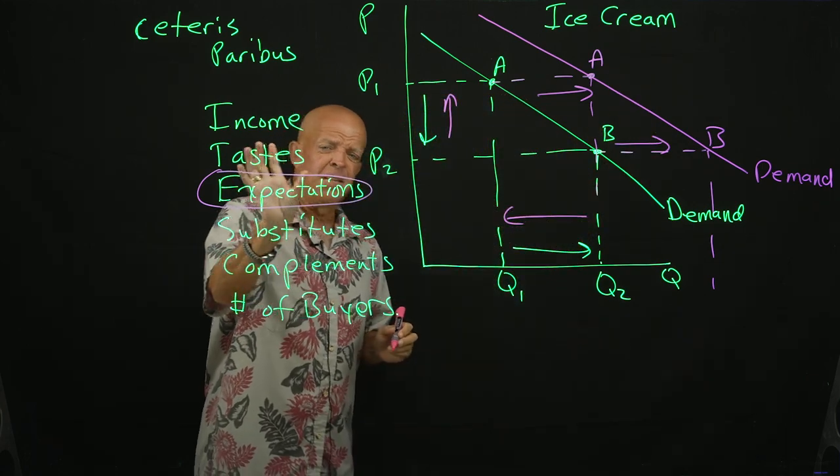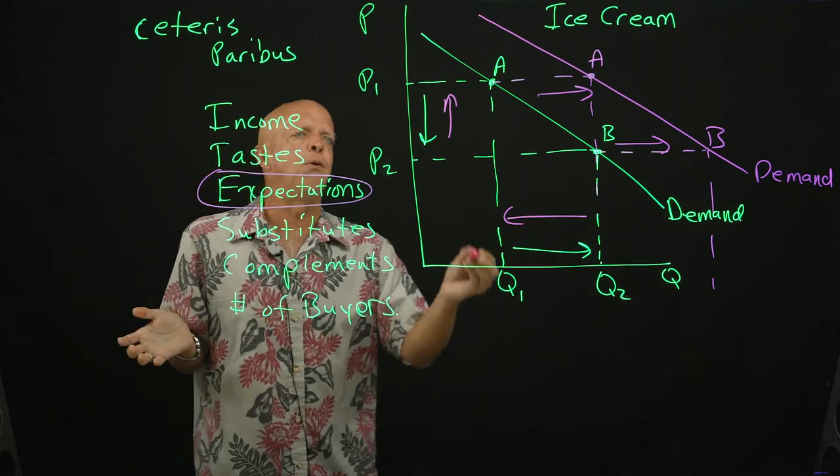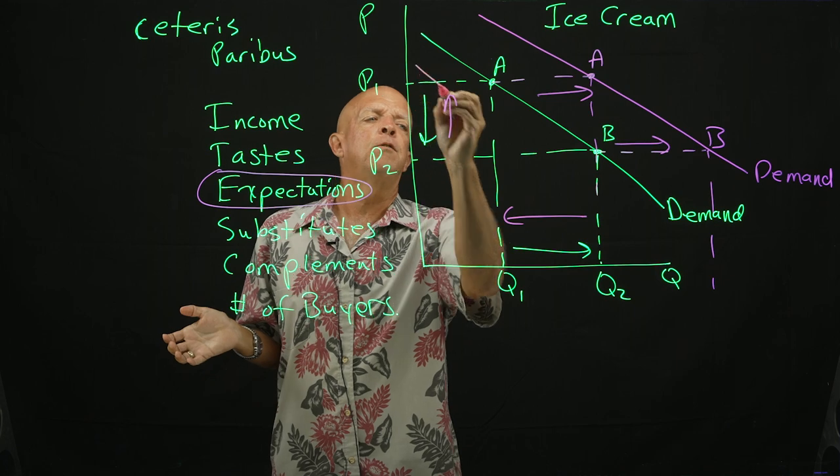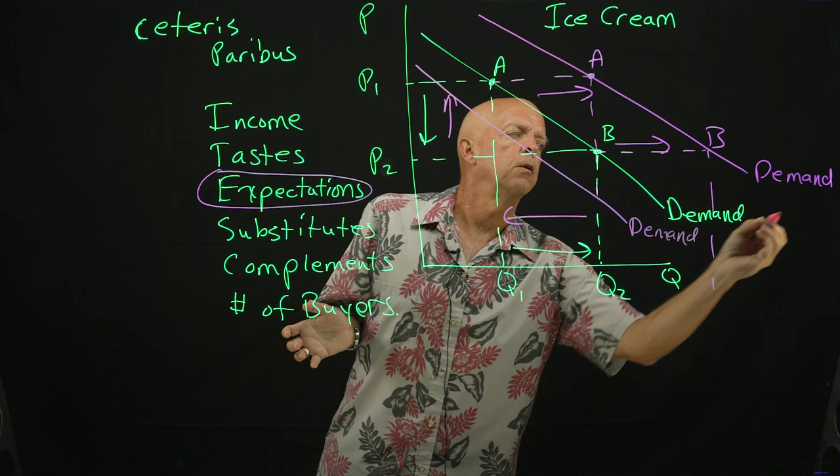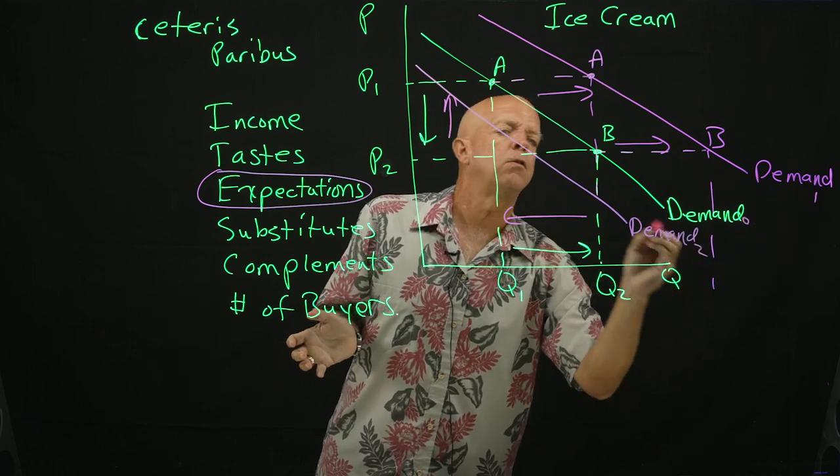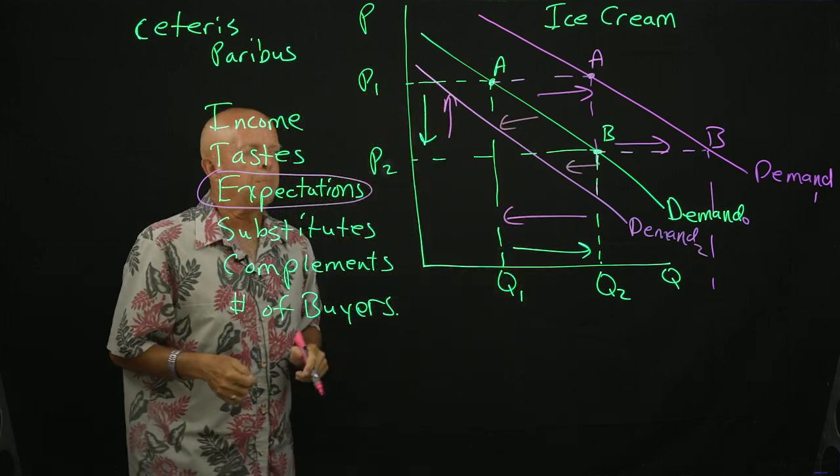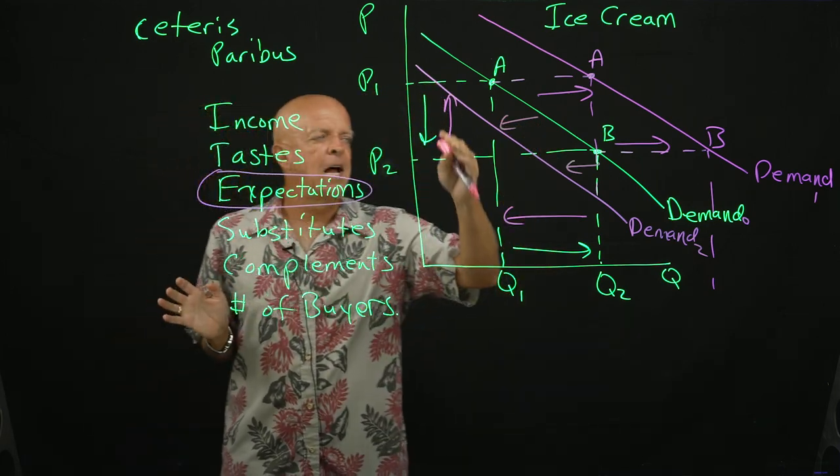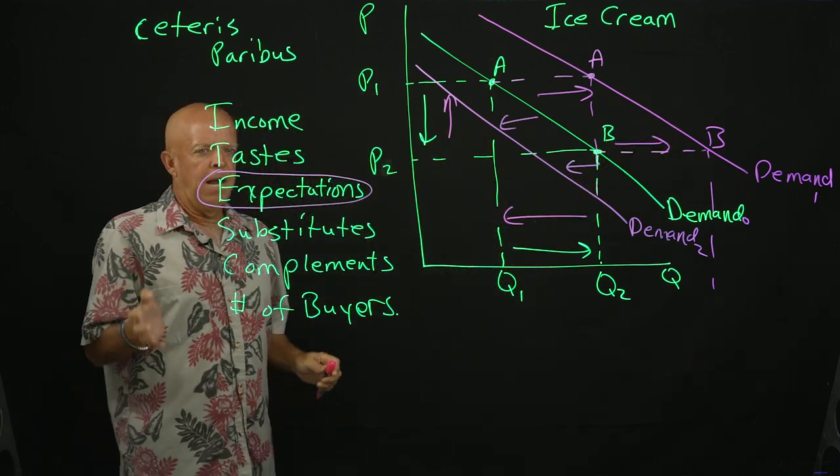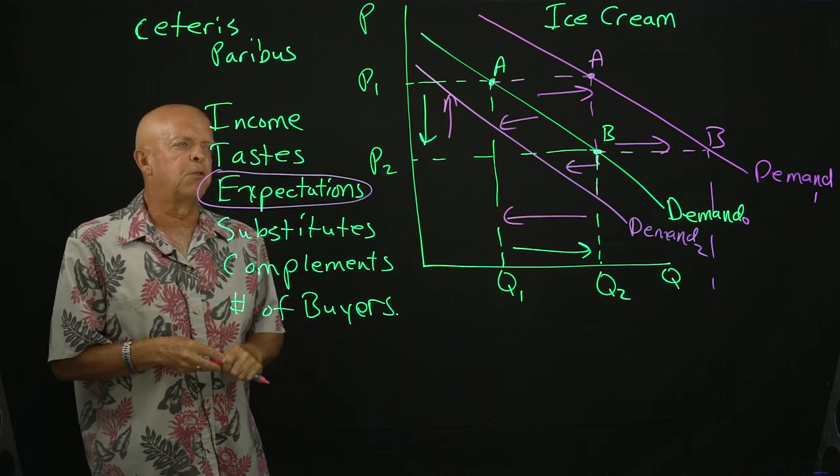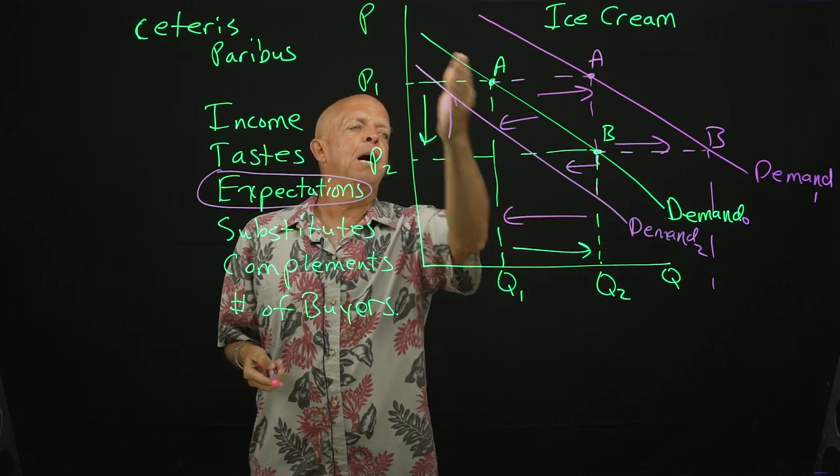Now, if these expectations means that I'm going to buy less of a product than before, well, my curve is going to shift to the left. Let's call this D zero, one and two. And this is going to shift this way, shift that way. So a shift is meaning that the whole line is going to shift either to the right or to the left. And that would be for something like expectations, not to be confused with a change in the price, which is going to be merely a change in the quantity.